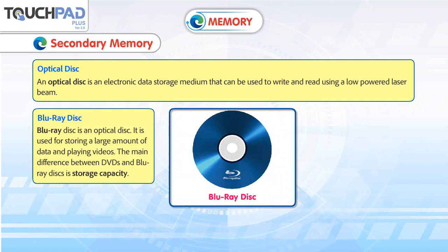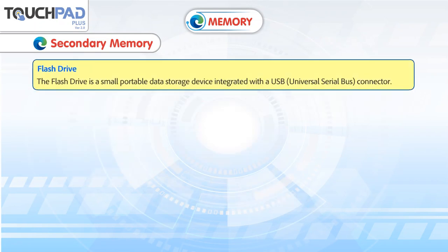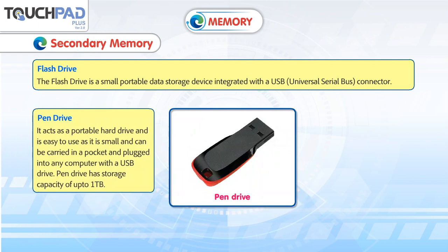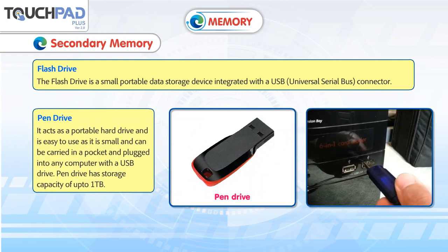Blu-ray disk is an optical disk used for storing a large amount of data and playing videos. The main difference between DVDs and Blu-ray disk is storage capacity. The flash drive is a small portable data storage device integrated with a USB (Universal Serial Bus) connector. It acts as a portable hard drive, easy to use as it is small, can be carried in a pocket, and plugged into any computer with a USB port. Pen drives have a storage capacity of up to 1 TB.